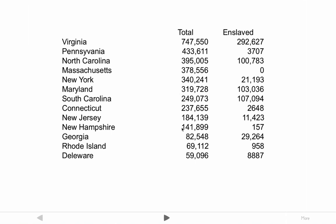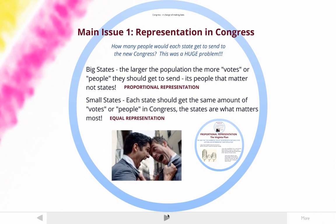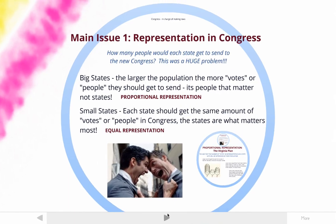But there are quite a few small states too — Georgia, Rhode Island, Delaware, New Hampshire, New Jersey, Connecticut. All of these states are relatively small or medium-sized, with Virginia being more than twice as big as Connecticut or South Carolina. The size of the states as far as their population is going to be a big problem — specifically, how many people would each state get to send to the new Congress.